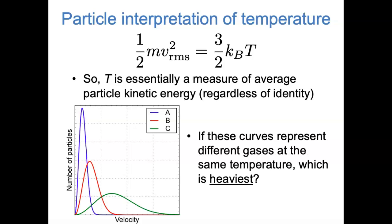The second question: if these curves represent different gases at the same temperature, which curve represents the heaviest gas? With temperature fixed, the right side three-halves kBT is constant, so one-half mv² equals a constant. As mass increases, velocity must decrease. The heaviest gas has the slowest average speeds — again, that's curve A.